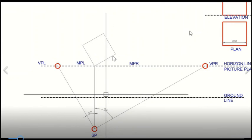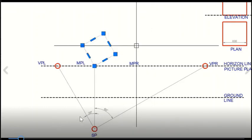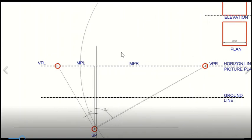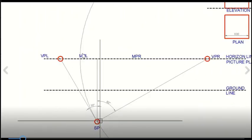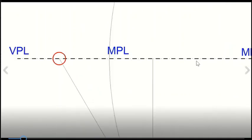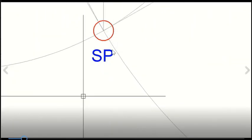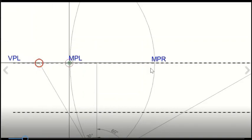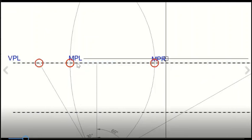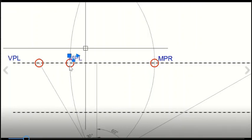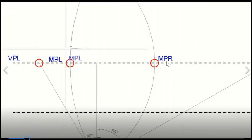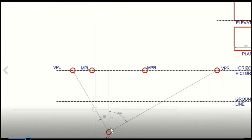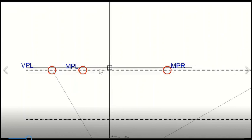When we place the object like this with the station point here, these will be the vanishing point right and vanishing point left. But in the shortcut method, we don't need to put the object on the picture plane. So we have to mark measuring points. Taking the vanishing point as a center and the distance from the vanishing point to the station point as the radius, we mark measuring point right and measuring point left similarly.